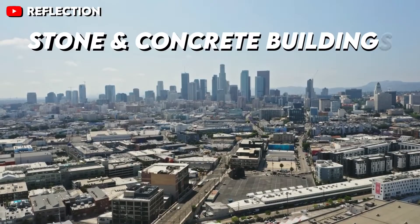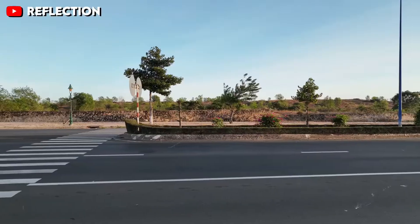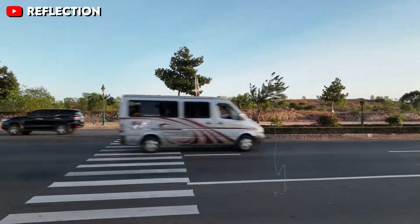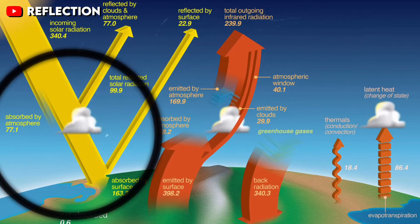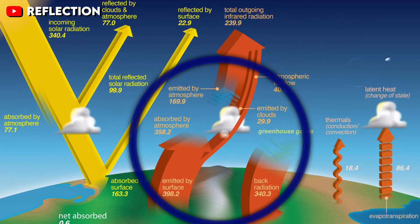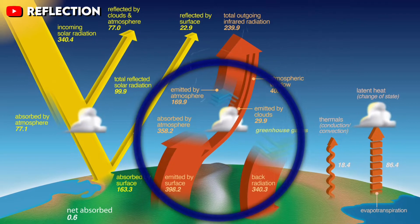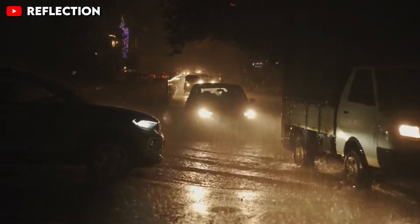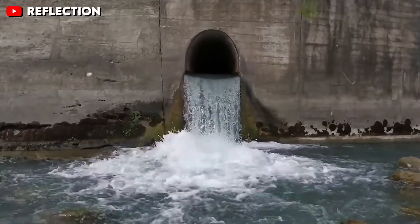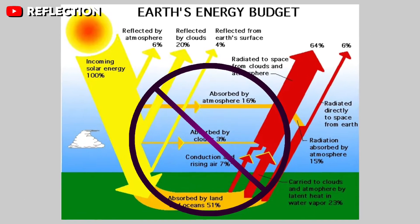On the other hand, stone and concrete buildings and asphalt roads within cities have the opposite effect, because they strongly absorb solar energy and release it back into the city's environment in the same amount and proportion. Rainwater does not collect in the city and is soon drained out through sewerage, which does not absorb heat.